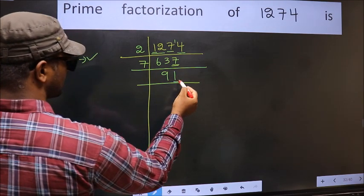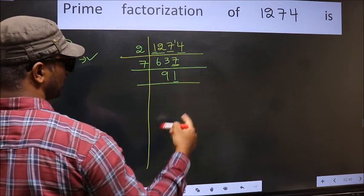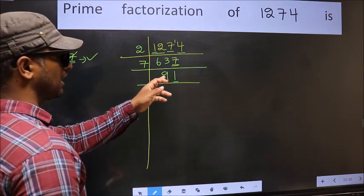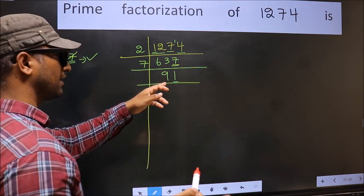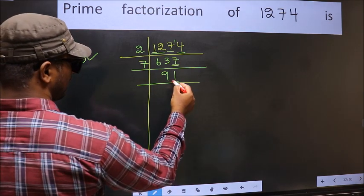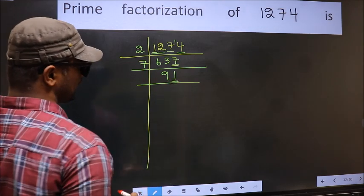Now last digit 1, not even, so not divisible by 2. To check divisibility by 3: 9 plus 1 is 10. 10 is not divisible by 3, so this number also not divisible by 3. Next prime number 5. Last digit is neither 0 nor 5, so this is not divisible by 5.